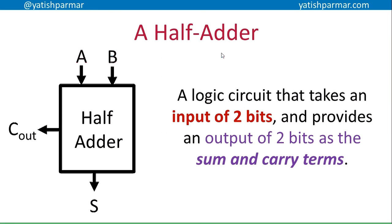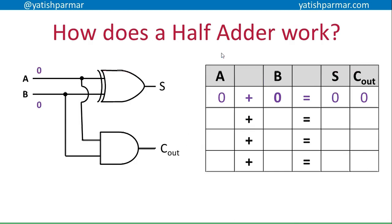The first circuit we're going to look at is a half adder. On the left hand side there's a little symbol of a half adder. By definition it has two parts: an input of two bits and an output of two bits - a sum and a carry term. There are different ways of constructing them, but the one I'm showing you uses XOR and AND gates.